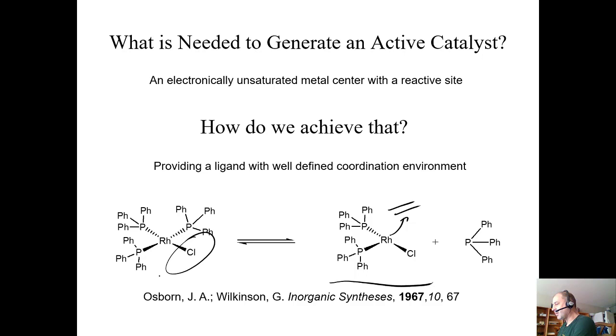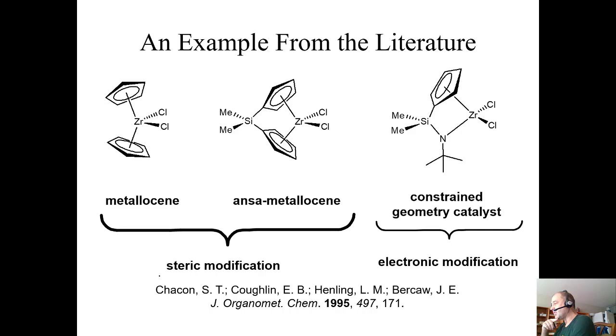The goal is to design a ligand that creates steric strain but isn't too bulky so it can still attach to a metal while leaving an active site open. We're looking at sterics and electronics - you want an electronically unsaturated transition metal environment so the metal will act as a Lewis acid and seek to react with other materials. This was back in 1967, a very active catalyst.